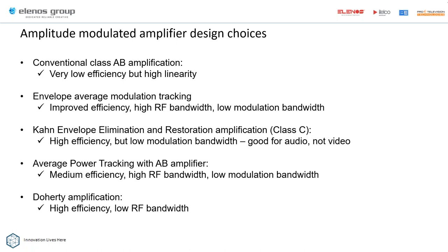We also have an extension called average power tracking, where the actual power supply follows the actual envelope to obtain much higher efficiency. It has high RF bandwidth but low modulation bandwidth — meaning it'll work on any frequency but it's a fairly complicated circuit. And of course the last one, which we're going to focus on most of all, is Doherty amplification — high efficiency and low RF bandwidth, and we'll go into why.